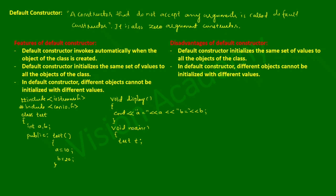With the help of object t, it is possible to call the display function. The constructor says that as soon as the object of the class is created, the constructor will get invoked automatically. User-defined functions have to be explicitly called with the help of the object, so I write t.display(). I cannot write t.test() because the constructor is invoked automatically as soon as the object is created. Then I'll add the getch() function and closing brace.